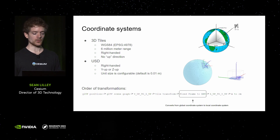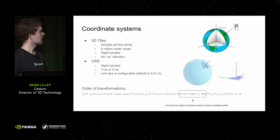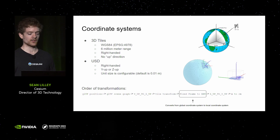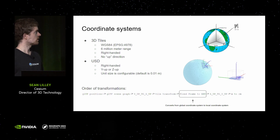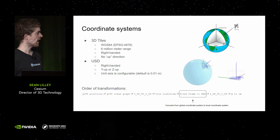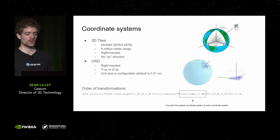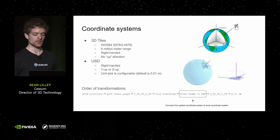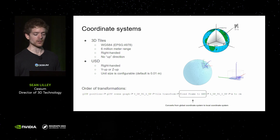One of the big challenges when dealing with 3D Tiles in USD is coordinate systems. 3D Tiles is typically a WGS84 representation of the world — a very large range, about 6 million meters, and a right-handed coordinate system with no fixed up direction since that depends on where you are on Earth. USD is also right-handed, can be Y-up or Z-up, with configurable unit size defaulting to centimeters. We go from GLTF through a few transforms and convert the global coordinate system of 3D Tiles into a local coordinate system using a fixed-frame-to-ENU conversion, taking a longitude-latitude point as your tangent plane and center of world, which then becomes the local coordinate system for placing USD assets.